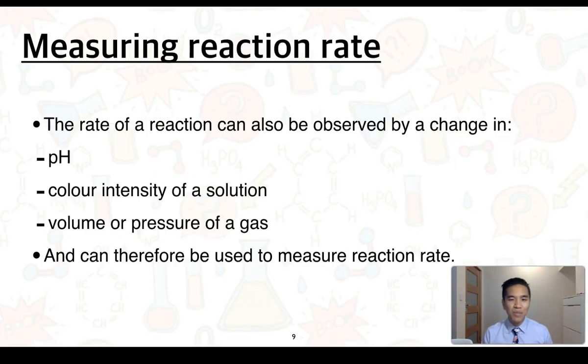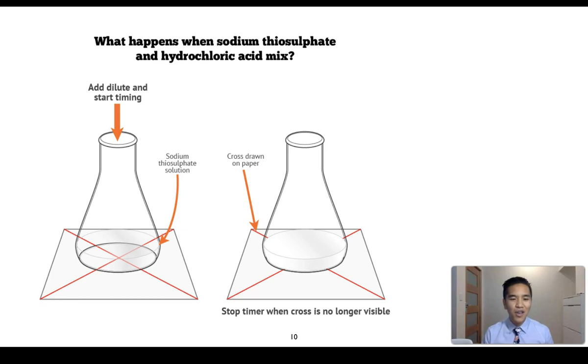There are actually other ways in which we can measure the reaction rate. We can observe reaction rate by a change in pH, colour intensity of a solution, volume or pressure of a gas. This is a fairly common reaction that you see in high school. This is the reaction between sodium thiosulfate and hydrochloric acid. When you mix the two together, which are both colourless liquids, give it a swirl. Well, you put it on a tile with a cross, and over time, the formation of a product, which is sulphur, will result in the cross becoming invisible when looking through your conical flask. So we could essentially measure the time taken for the cross to disappear, and this would be an indication of the rate of reaction.